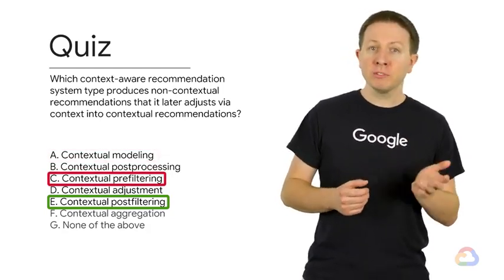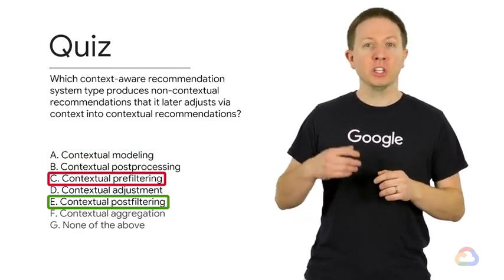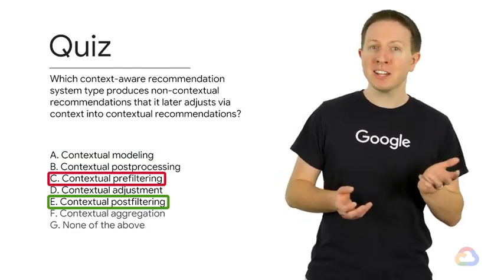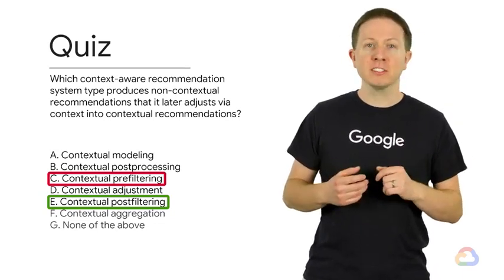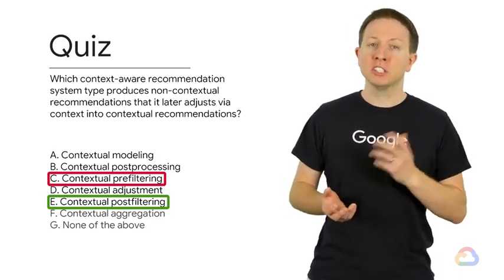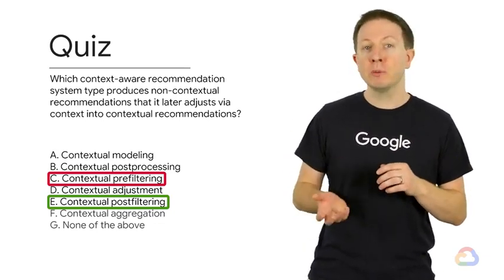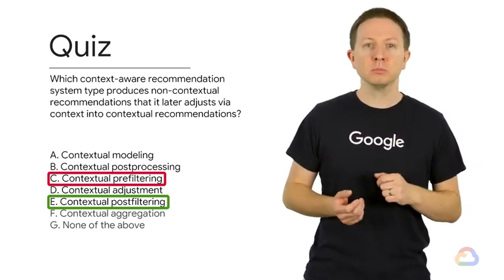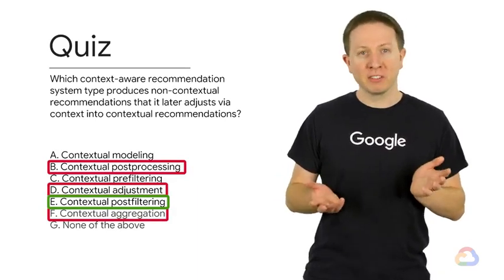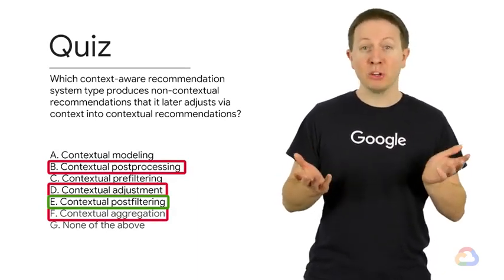Contextual pre-filtering, as the name suggests, first filters the user-item context data set by context, or a generalized context to reduce the original tensor to a subset of just user-item interactions that we can use in our traditional two-dimensional recommendation system. The other answers we didn't cover and were just made up, but they sound cool.